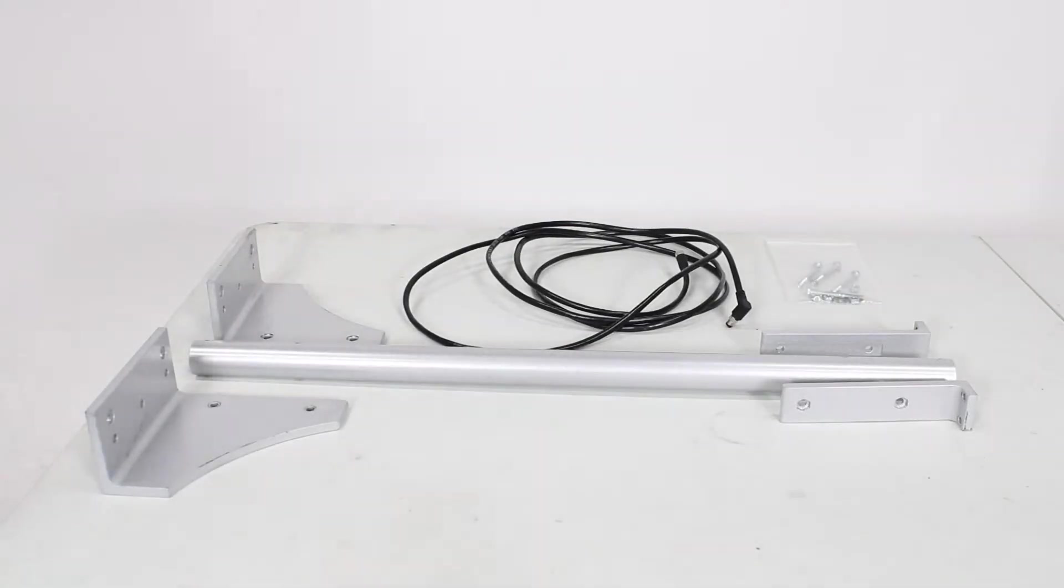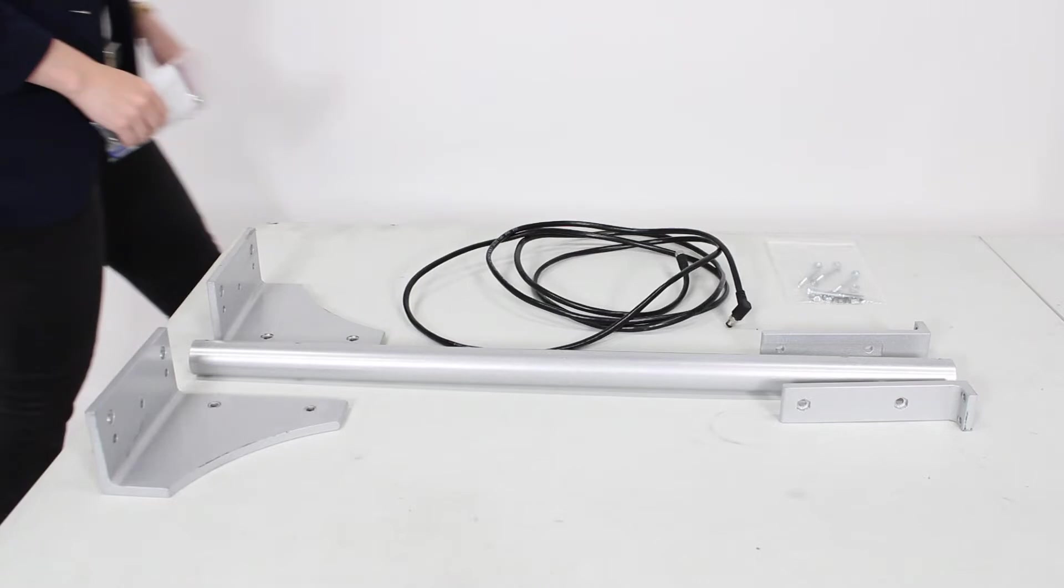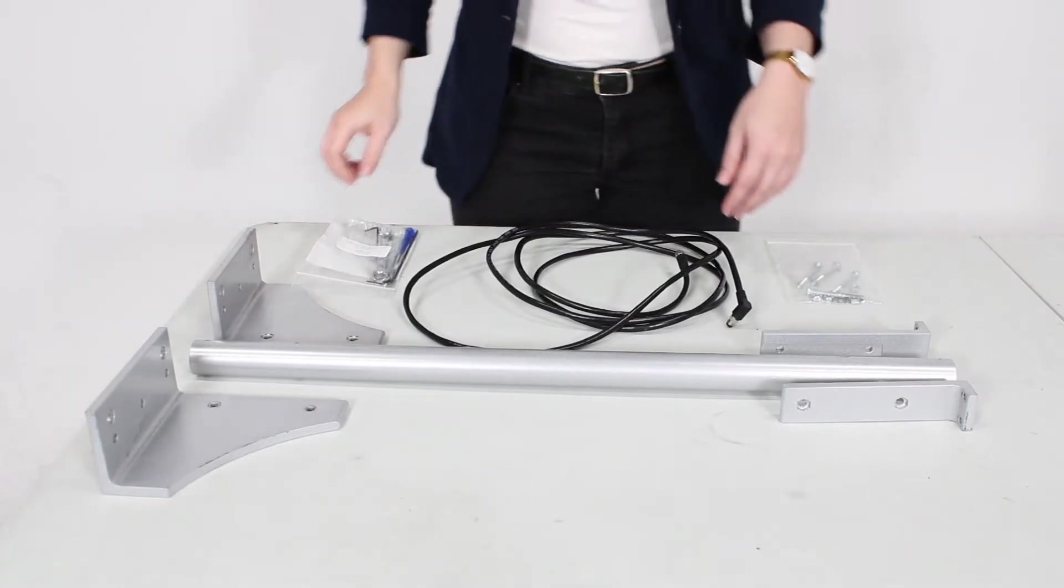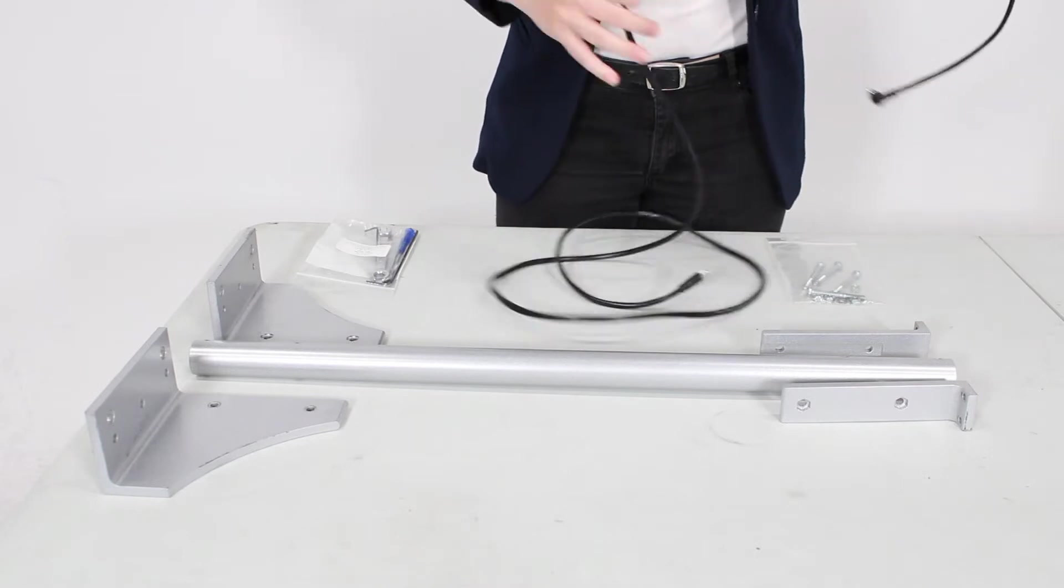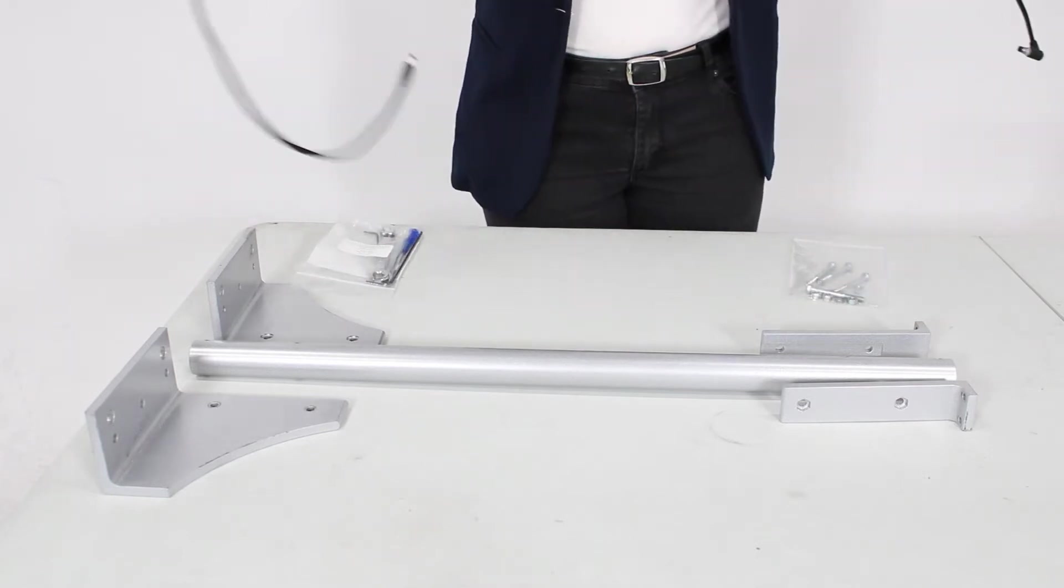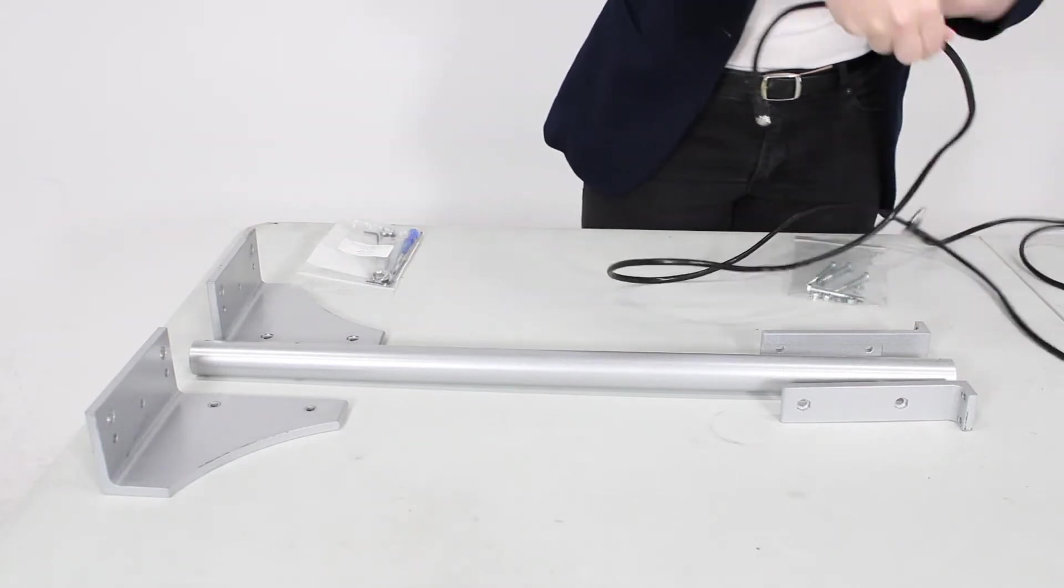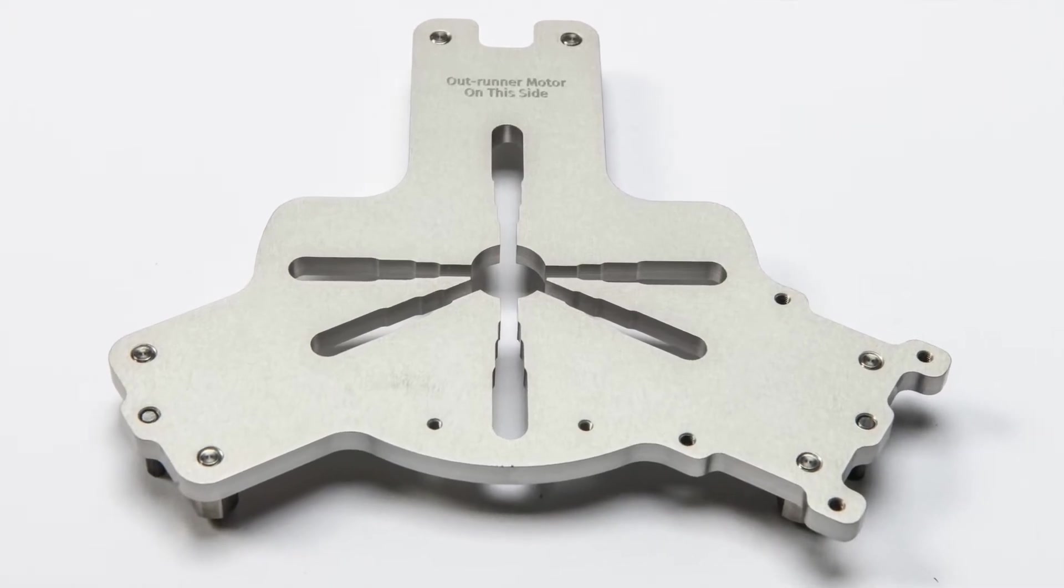Finally we have the stand hardware which includes two lower L brackets for securing the stand to the floor or the ground rails, one round tube for supporting the FMU and protecting the cables, two upper L brackets for securing the FMU to the stand, and the motor mounting plate for securing the motor to the rest of the stand.